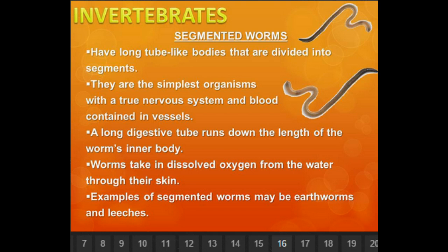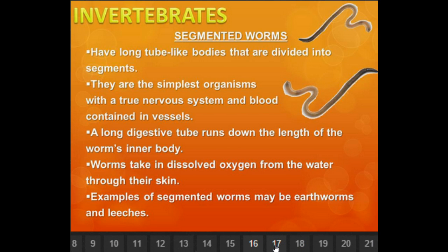The next invertebrate is the segmented worm. Anyone who has ever gone fishing has seen a segmented worm — an earthworm. They have long tube-like bodies divided into little segments. They're the simplest organism that still has a true nervous system and blood contained in vessels. They have a long digestive tube running the length of the worm's inner body, and they take in oxygen dissolved from the water or soil around them through their skin. Examples include earthworms and leeches, which will suck your blood.